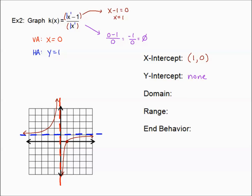Domain: everything except zero. So the set of all x such that x is not equal to zero. Range is not too bad this time — just the value of one is not touched. All y such that y is not equal to one.